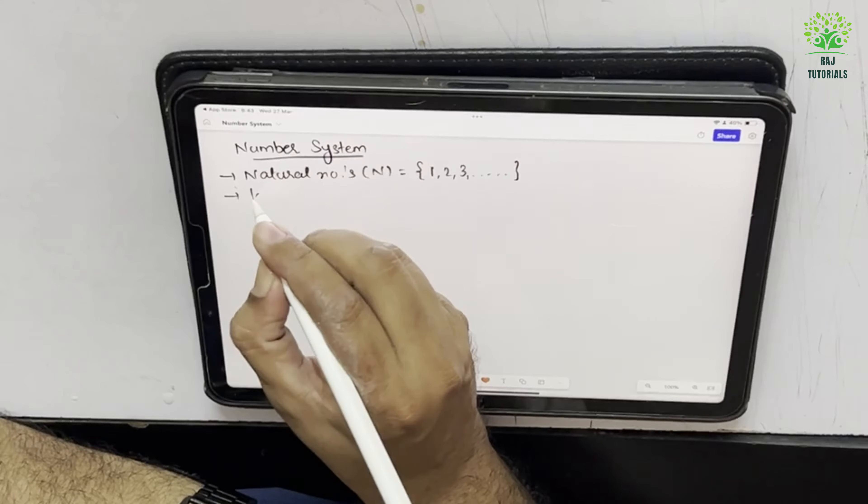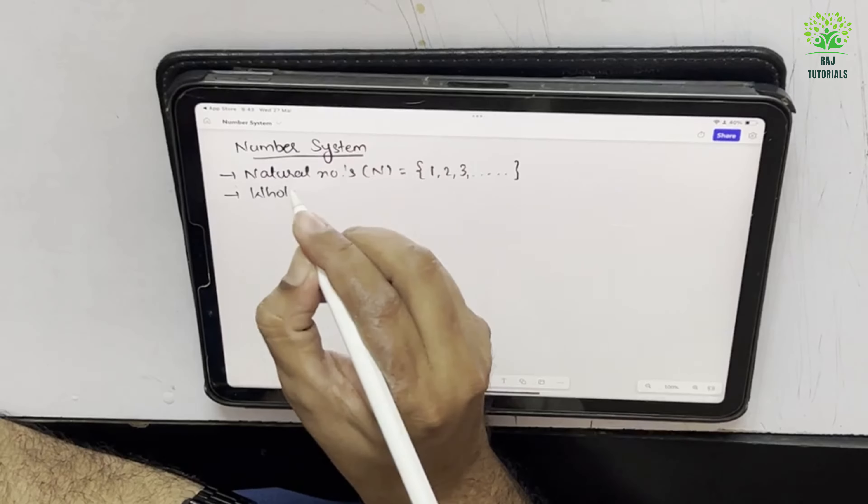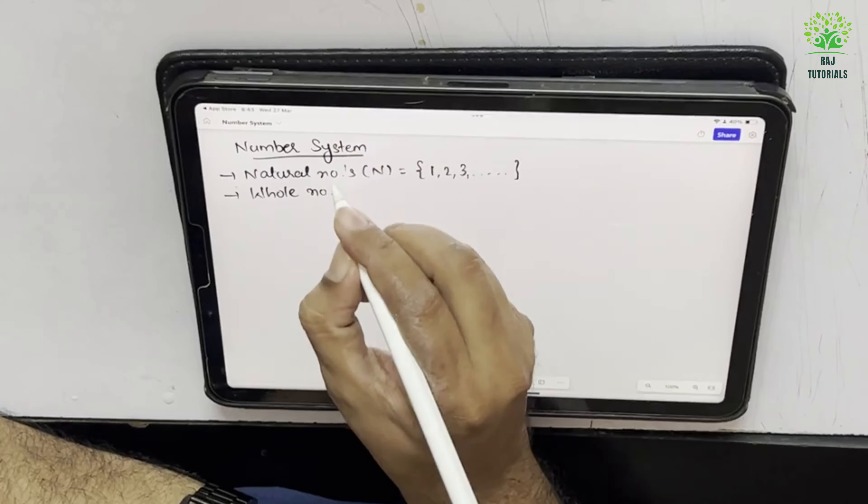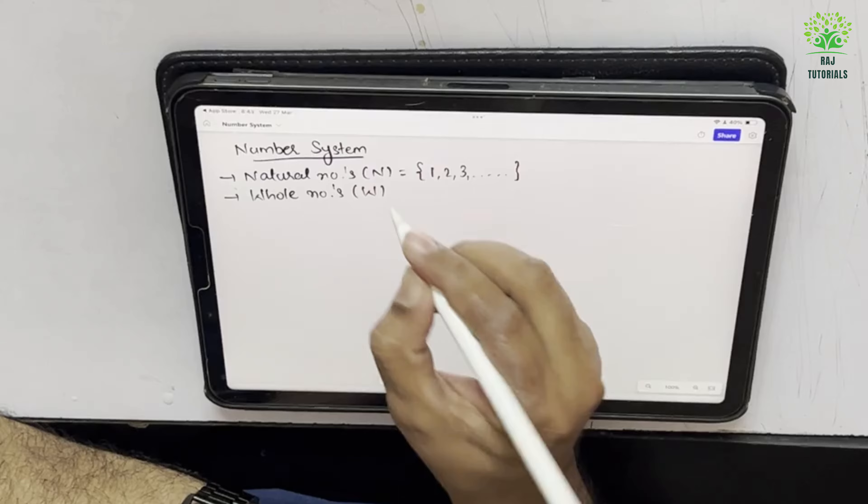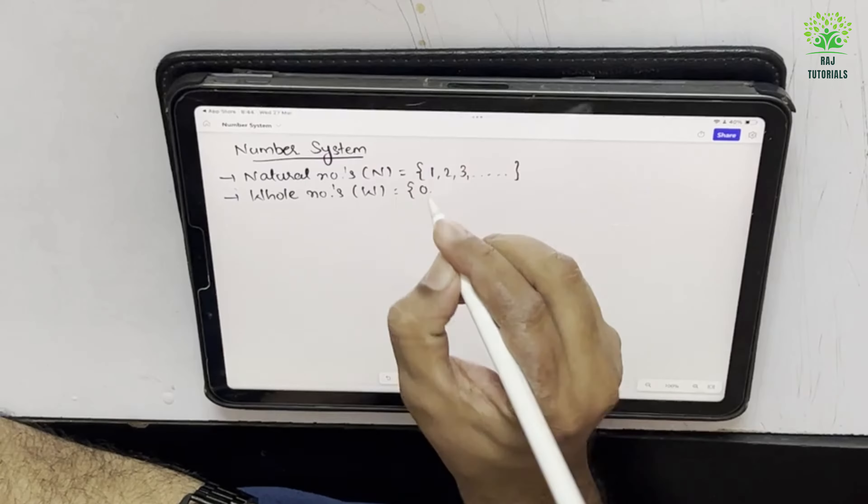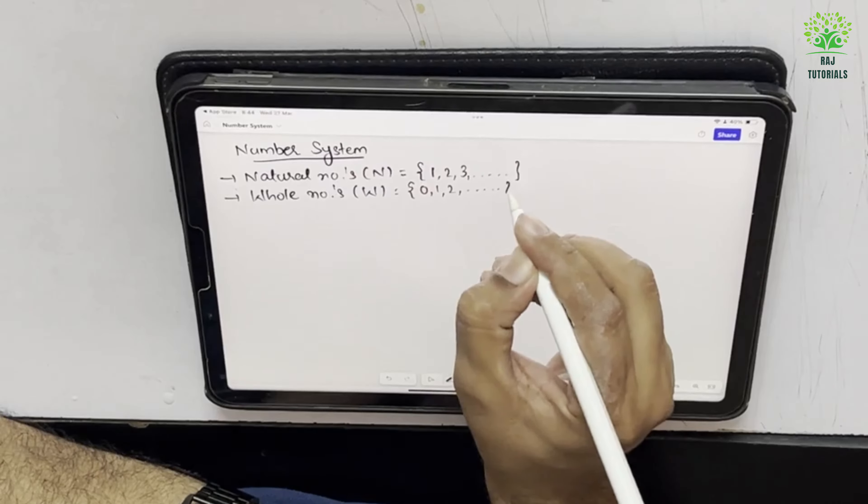Then the second number pattern which we know are whole numbers that are represented by W and they start with 0, 1, 2 till infinity.